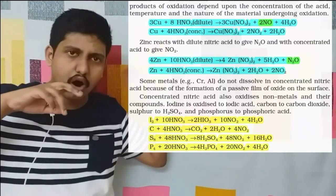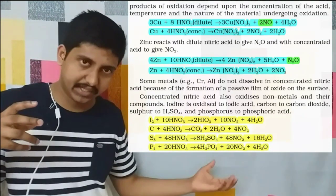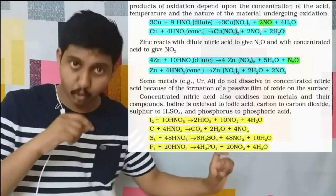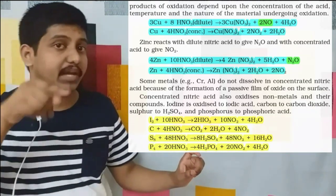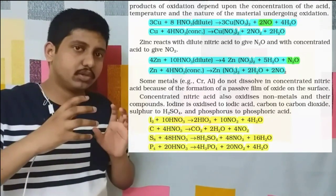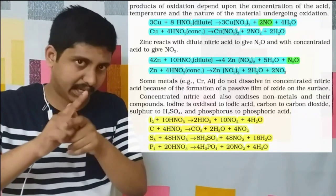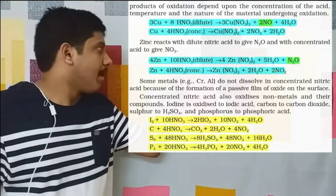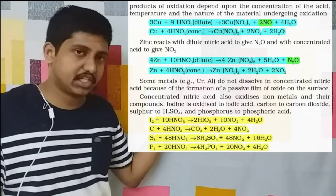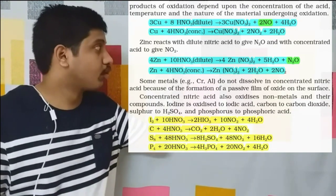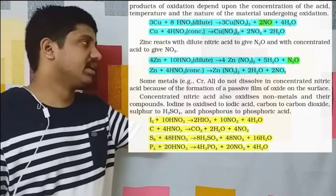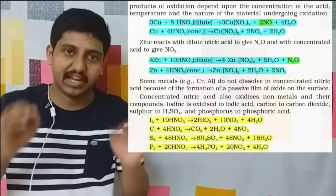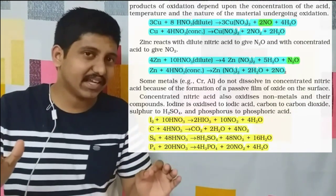Almost all metals, non-metals etc. combine with concentrated nitric acid to produce NO2 as a byproduct. HNO3 with most reactions gives byproduct NO2. That is a very important point. But with dilute HNO3: copper with dilute HNO3 gives NO, while zinc with dilute HNO3 gives N2O.